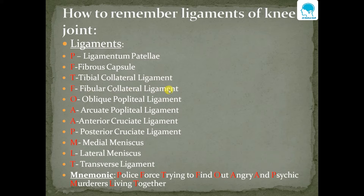O stands for oblique popliteal ligament, A for arcuate popliteal ligament, A for anterior cruciate ligament, P for posterior cruciate ligament, M for medial meniscus, L for lateral meniscus, and lastly T for transverse ligament.